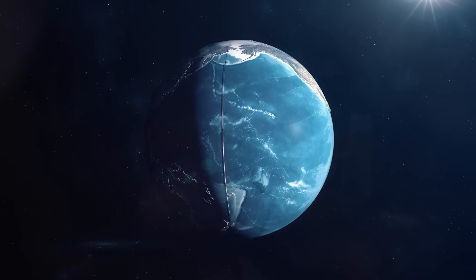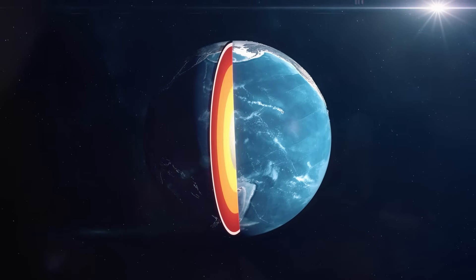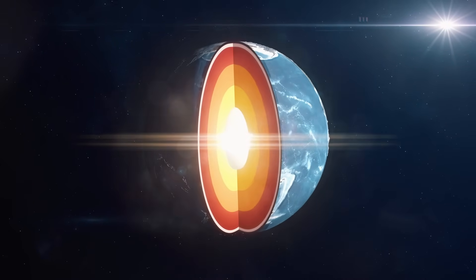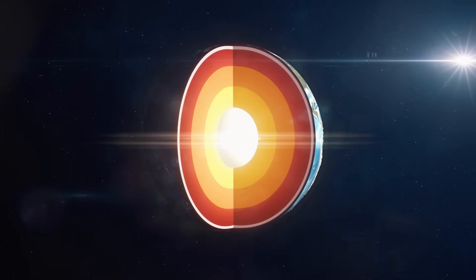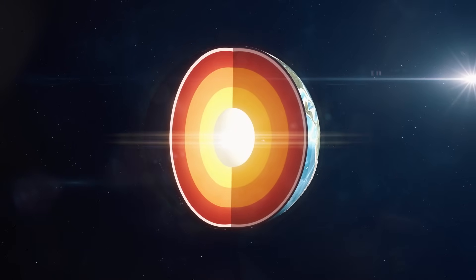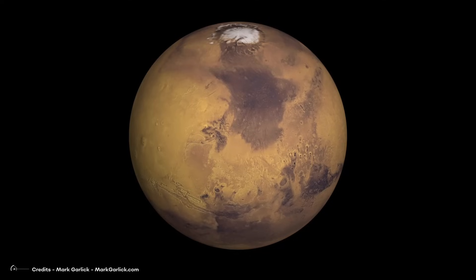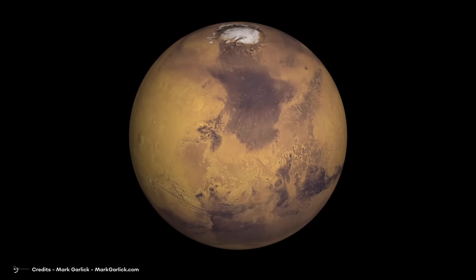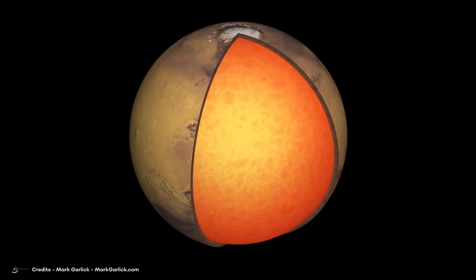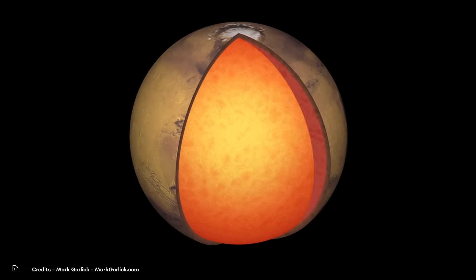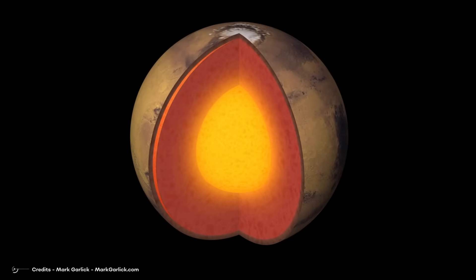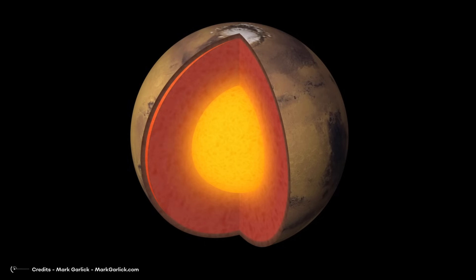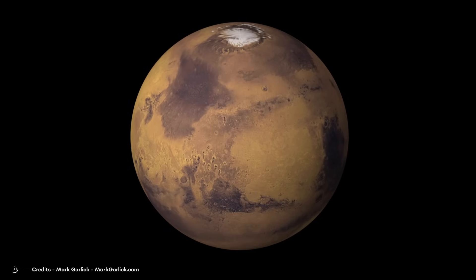For a planet to have a magnetic field, it needs a few things: a molten, conductive, electricity-friendly core and some kind of motion. Earth's outer core, with its molten iron dance, is perfect for this. However, not all planets have the right conditions. Some planets, like Mars, have solid cores or cores that don't move much. The effect for which a magnetic field is created in the presence of moving electrical currents is known in physics as the dynamo effect.